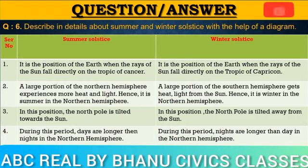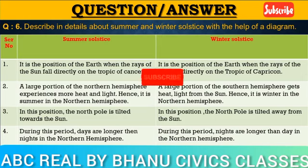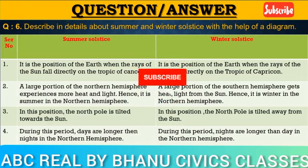Question number six: Describe in detail about summer and winter solstices with the help of a diagram. Summer solstice: It is the position of the earth when the rays of the sun fall directly on the Tropic of Cancer. A large portion of the northern hemisphere experiences more heat and light; hence, it is summer in the northern hemisphere. In this position, the north pole is tilted towards the sun, and days are longer than nights in the northern hemisphere.